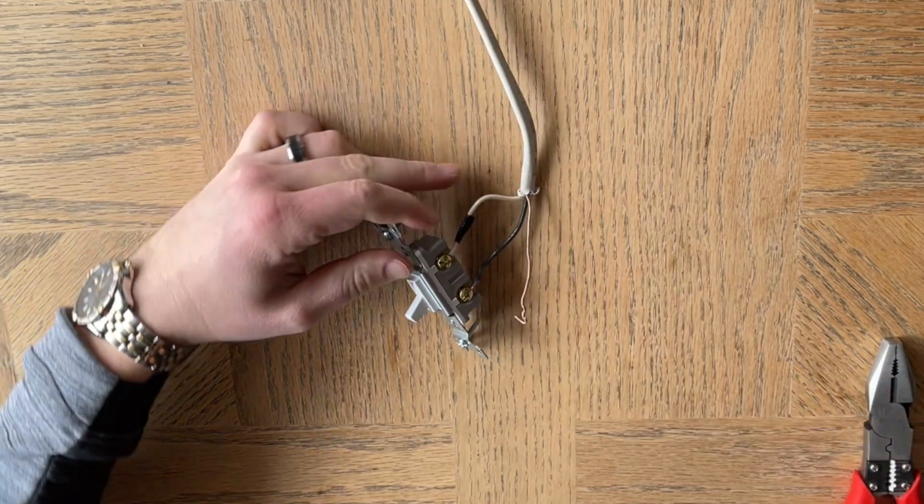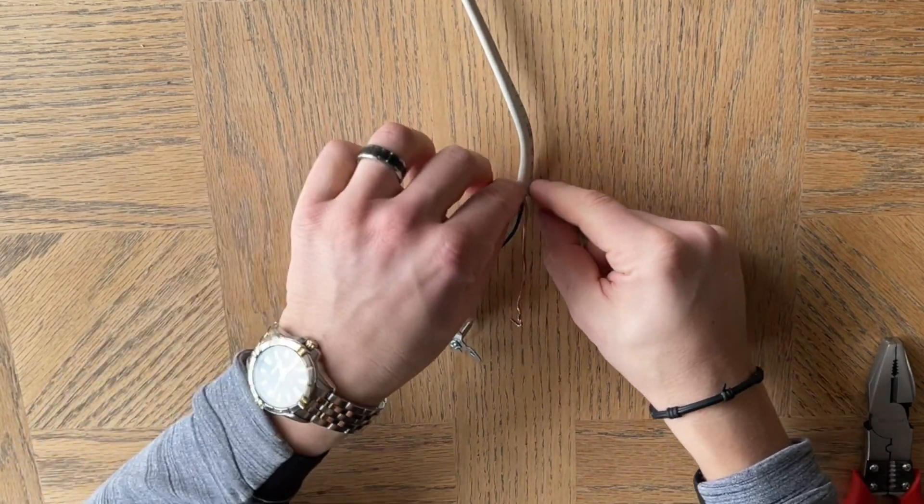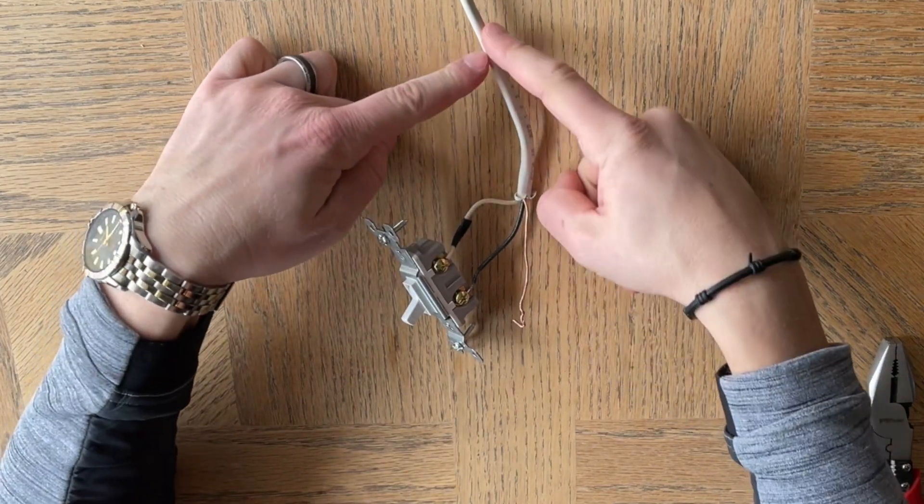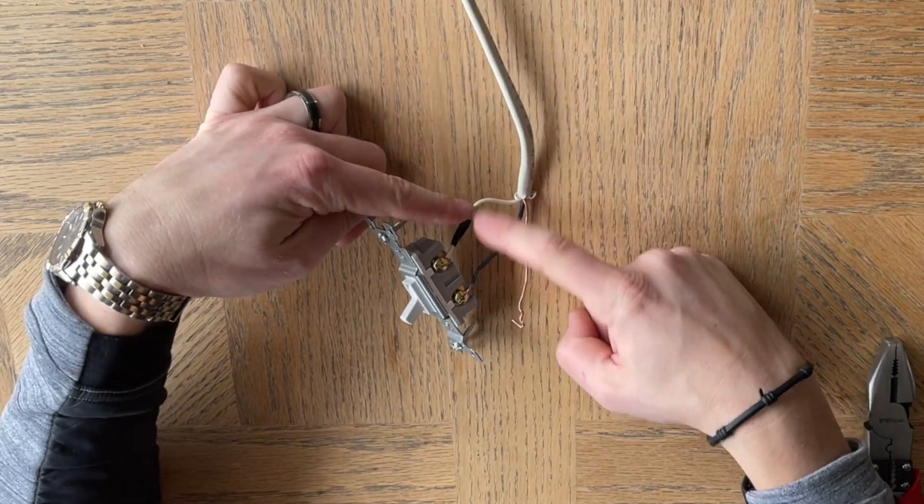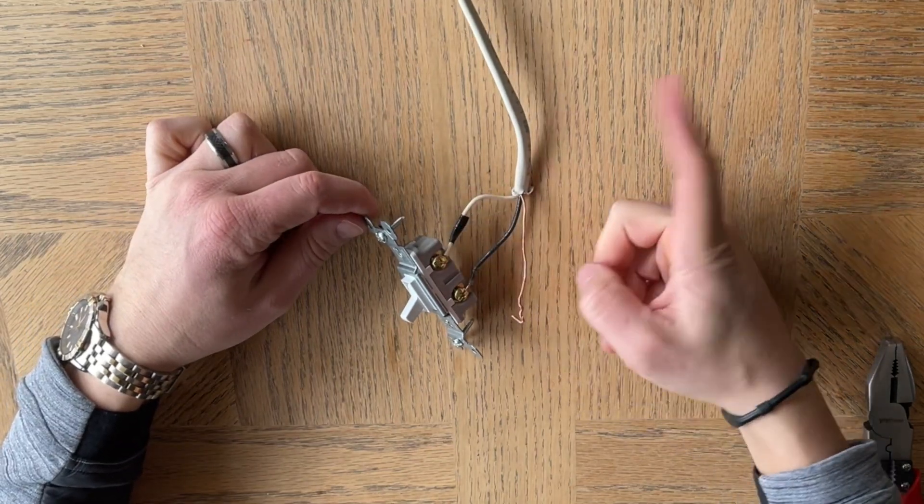And so sometimes you might see individual wires. They might not have this coating. They might not be encased, which is okay. But typically what they'll do, electricians will just run them down with a set of wires like this, and then they'll label the neutral to become the hot for that switch.